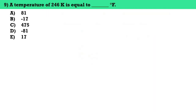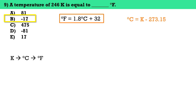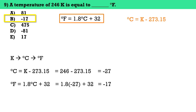Number nine, a temperature of 246 Kelvin is equal to blank degrees Fahrenheit. The answer here is letter B, negative 17. To convert Kelvin to degrees Fahrenheit, we must first convert Kelvin to degrees Celsius, then convert degrees Celsius to degrees Fahrenheit. Using these formulas, the final answer is negative 17 degrees Fahrenheit.